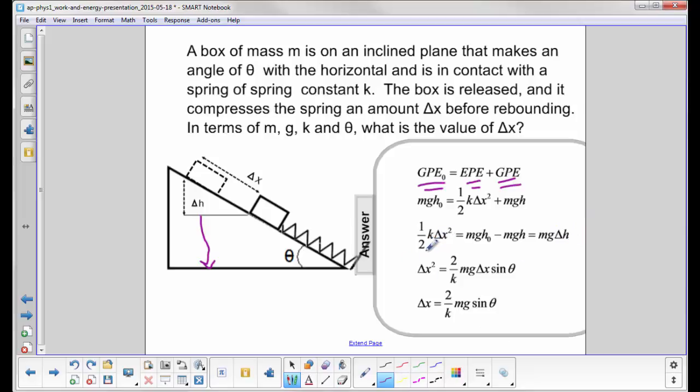I divide through by K, multiply by 2, I have delta X squared is 2 over K mg delta X sine theta.